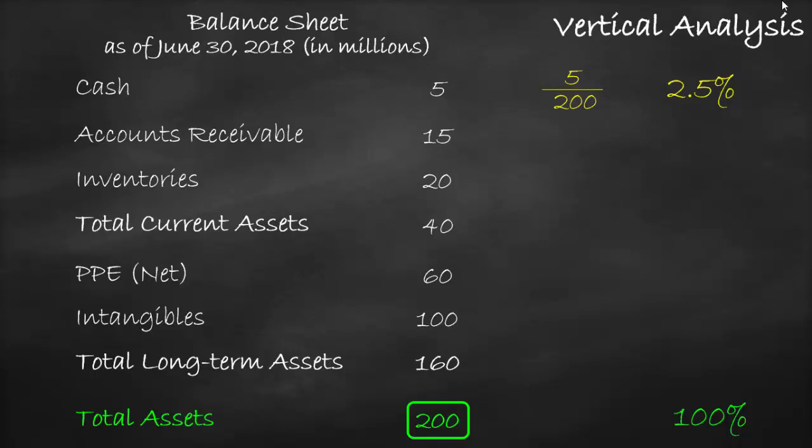To get a vertical analysis of the accounts receivable, we divide accounts receivable of $15 million by assets of $200 million, which is equal to 7.5%. And so on for each item on the balance sheet.